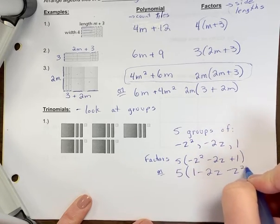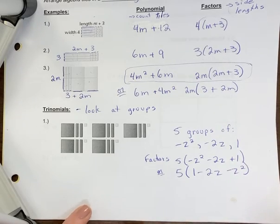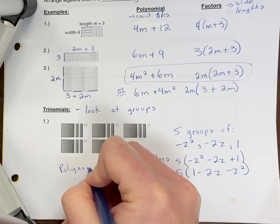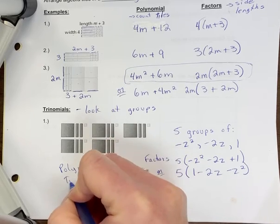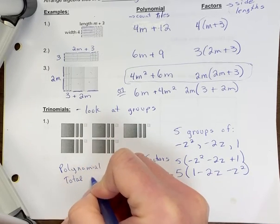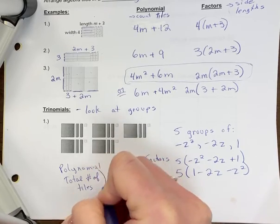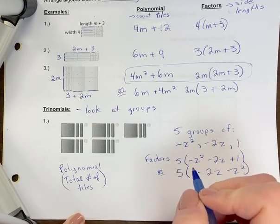Technically, these are all equivalent, so they are both correct. What is the actual polynomial? That's the factor. So the polynomial is the total number of tiles. Okay, so if we were to look at that,